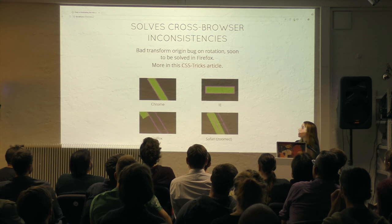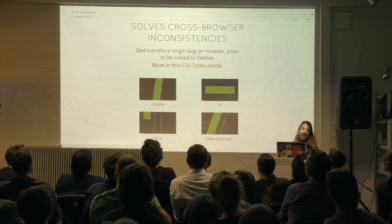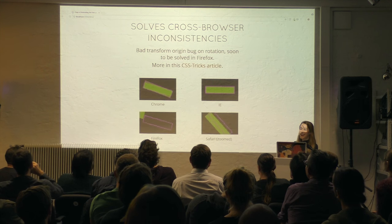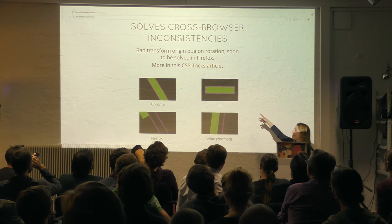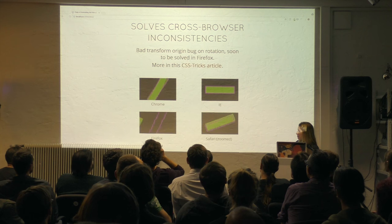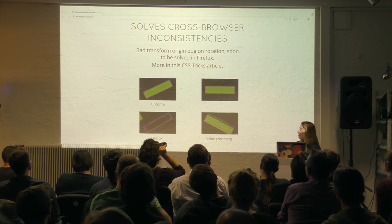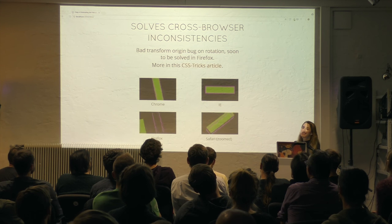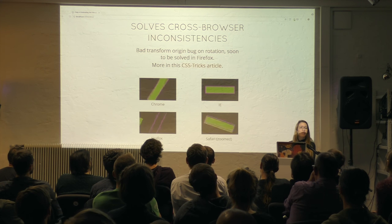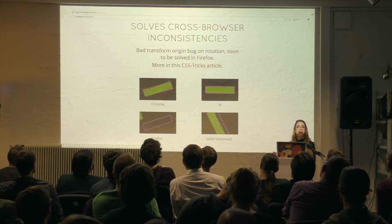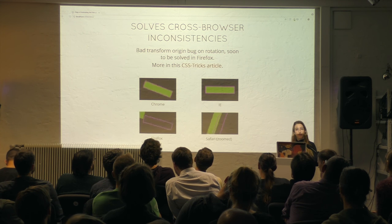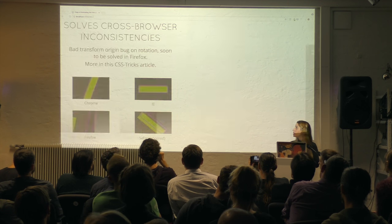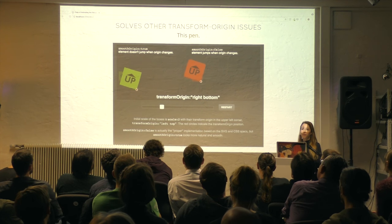GreenSock also solves cross-browser inconsistencies. SVG DOM nodes are not even animatable in IE yet — and Firefox said they fixed it and then they didn't. All of these things really do add up. As soon as you start animating something, if you're working with GreenSock, it just behaves the way that it should on all browsers. They also correct the spec — this is actually the way the spec thinks you want stacked transforms to work. That's nuts. GreenSock corrects for spec involvement and makes those calculations under the hood so it doesn't create crazy unexpected behavior.